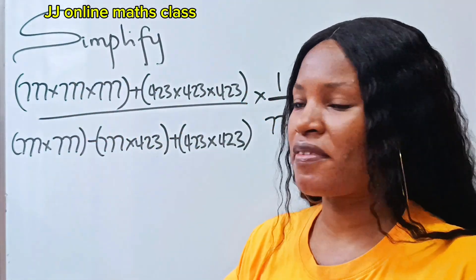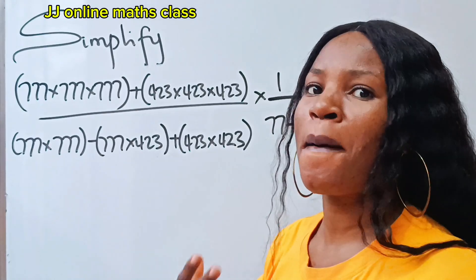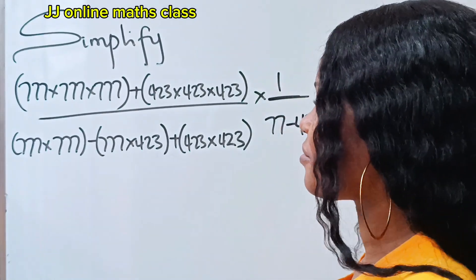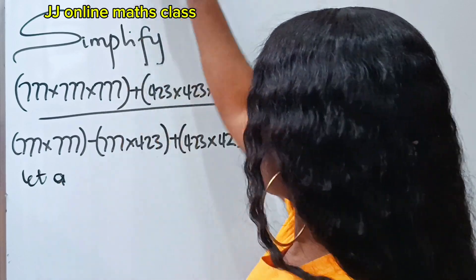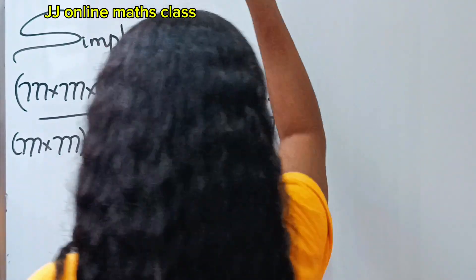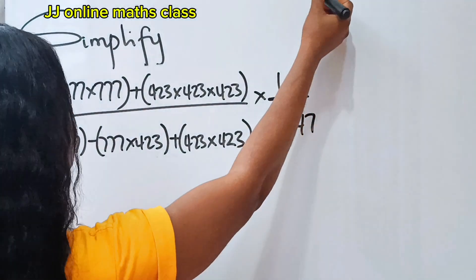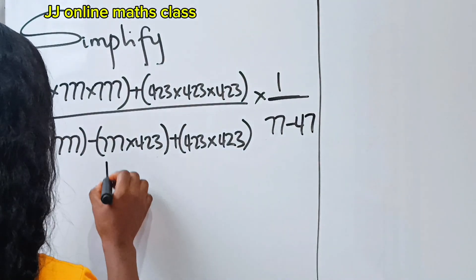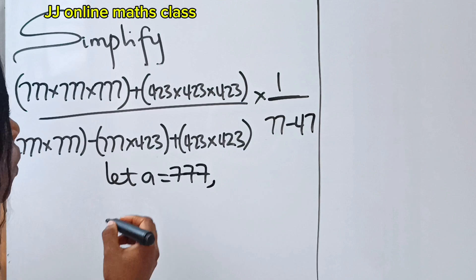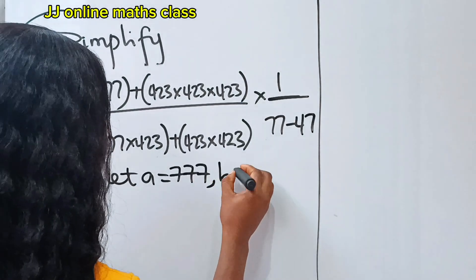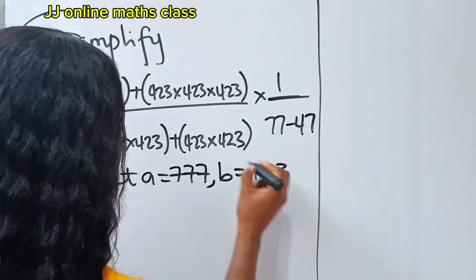We are asked to simplify, so how do we go about it? We can say let a equals 777, and b equals 423.